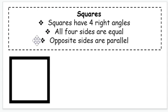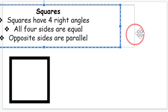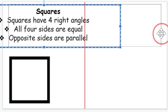So one first important thing to notice is that squares have four right angles. That means within a square there are four angles that measure 90 degrees.